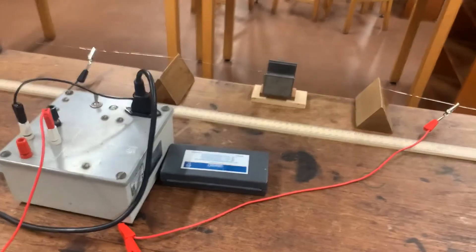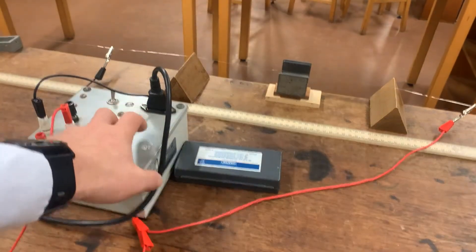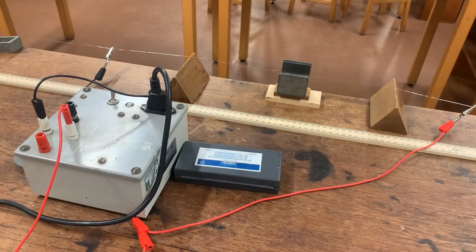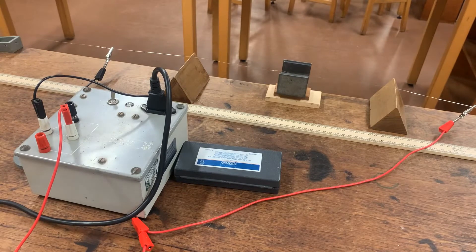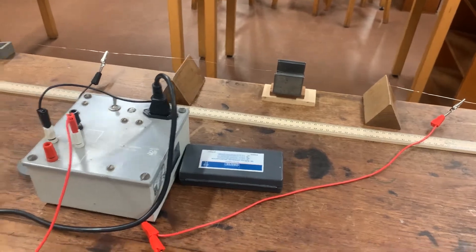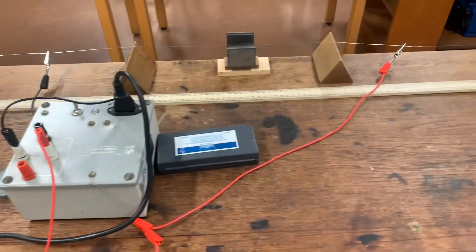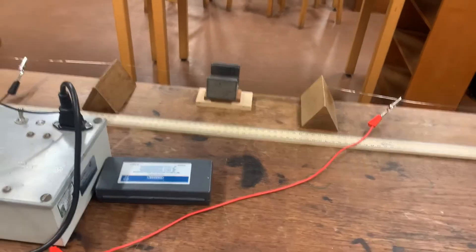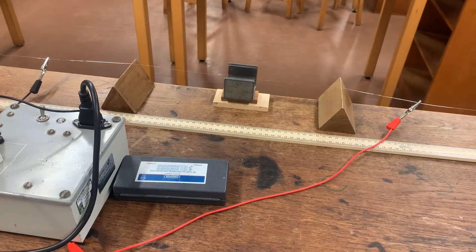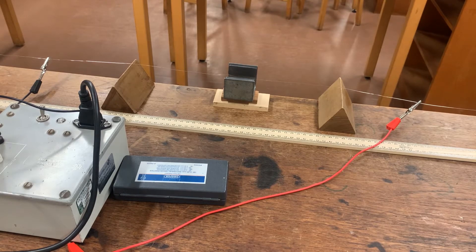What's going to happen therefore is that due to the magnetic field and the current which will be alternating, we're going to get a periodic force on the wire. Now the basis of this experiment is to investigate what effect the tension in the wire will have on the length of wire required to generate the fundamental standing wave.